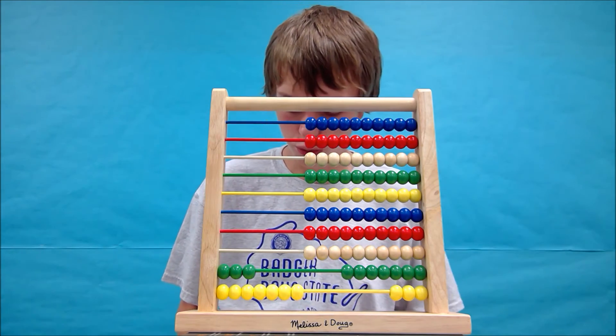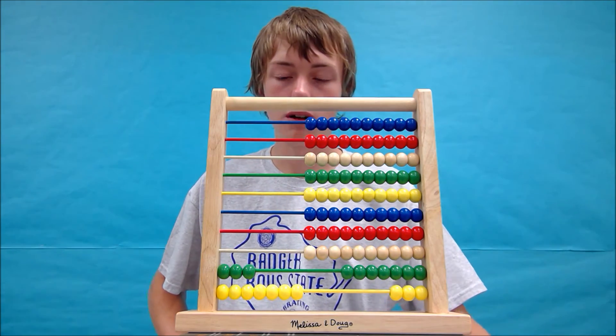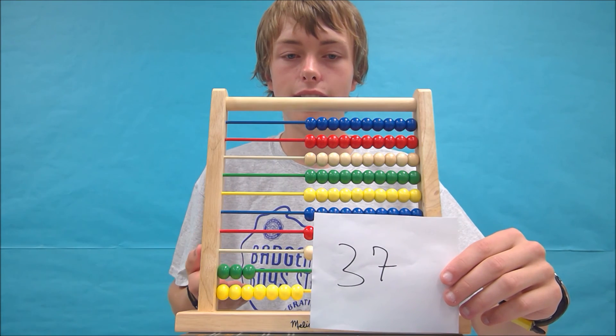So we've got 3, 2, 4, 6, 7. So the answer to this problem is 37. And your abacus should look like that.